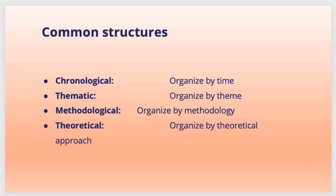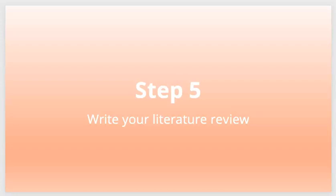A chronological approach involves tracing the development of your topic over time. Try to avoid simply listing studies in chronological order; instead, identify trends and turning points, and explain how different studies fit into the timeline. Step five: write your literature review. Now you are ready to start writing because you have already collected a lot of research papers based on your search terms from scholarly databases.